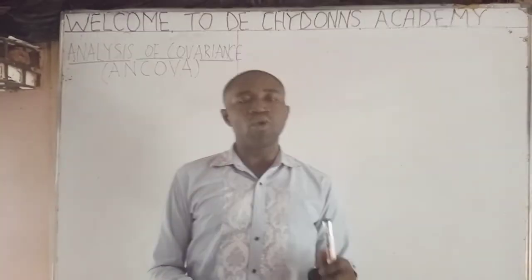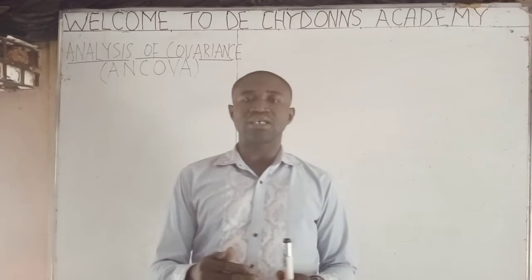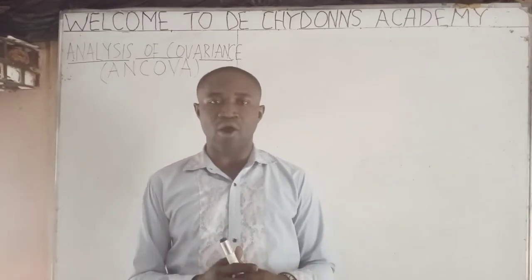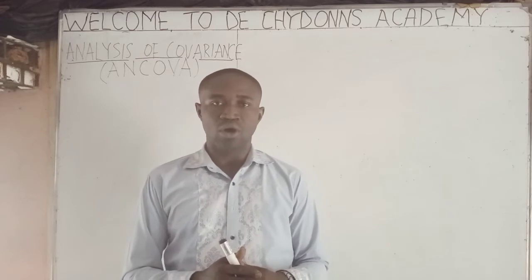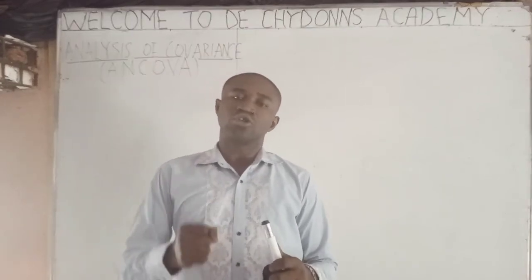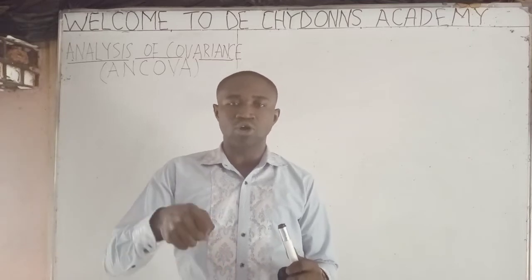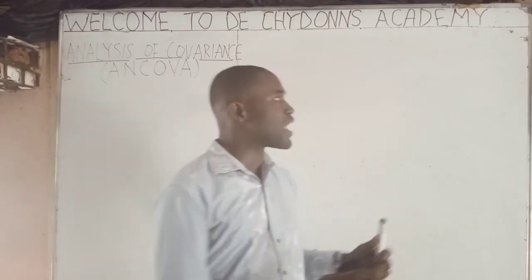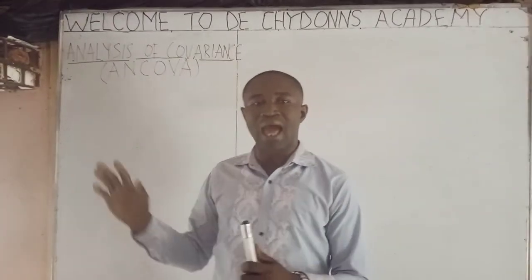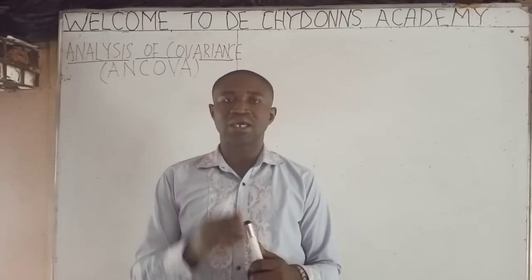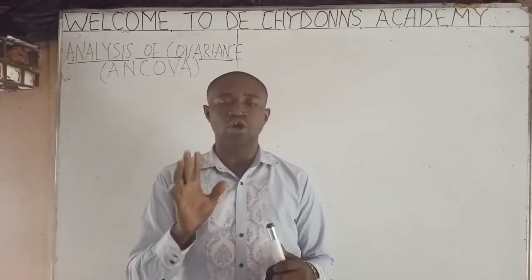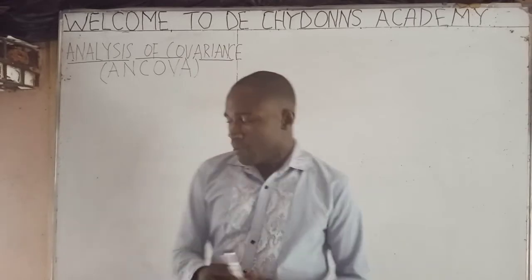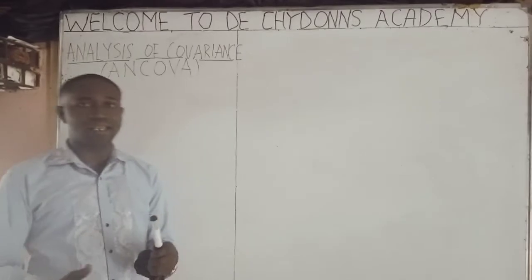Why do we use ANCOVA in analyzing data? We use it so as to reduce the within-group error, eliminate confounds, and hence get more accurate results from our data. The independent quantitative variable in ANCOVA is called the covariate.